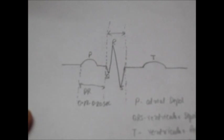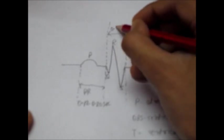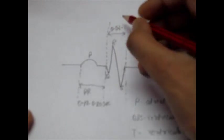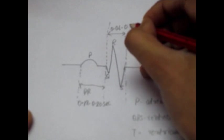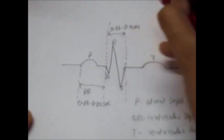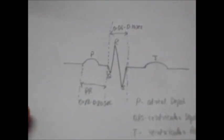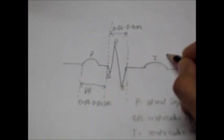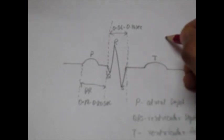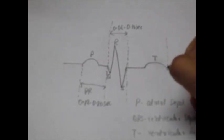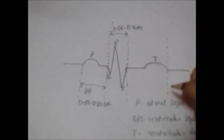This wave also has a duration which is around 0.06 to 0.10 seconds. Now there is a QT interval. QT interval is from the beginning of Q wave till the end of T wave.